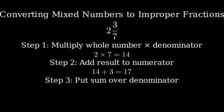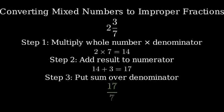Step 3. Put this sum over the original denominator. 17 goes over 7, giving us 17 sevenths.